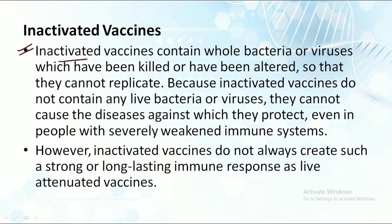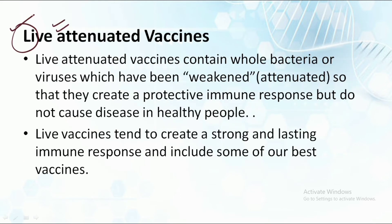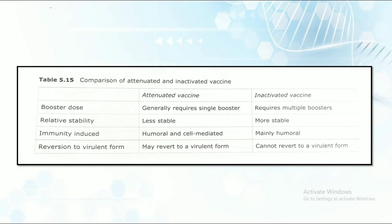The third type is the inactivated vaccine. Inactivated vaccines contain whole bacteria or viruses that have been killed or altered so they cannot replicate. Because they do not contain live bacteria, they cannot cause the disease even in people with severely weakened immune systems. However, inactivated vaccines do not create as strong and long-lasting an immune response as live attenuated vaccines. So live attenuated vaccines are the best, and inactivated vaccines are second best.